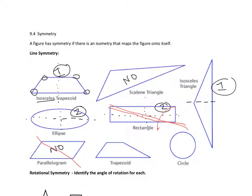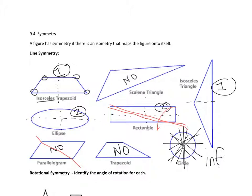A parallelogram has no lines of symmetry — you couldn't do it diagonally because that wouldn't fold right. A trapezoid has no lines of symmetry. A circle has infinite lines of symmetry. This is also called reflectional symmetry — if you see 'reflection symmetry' or 'line symmetry,' it's the exact same thing.